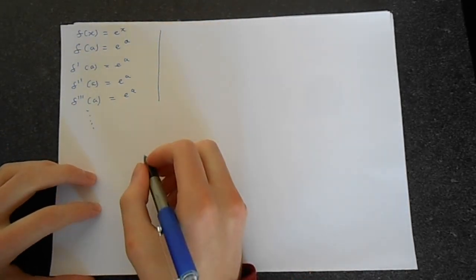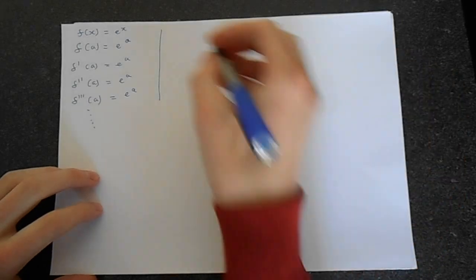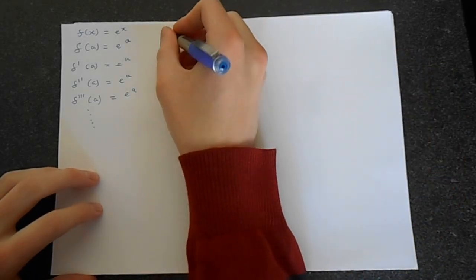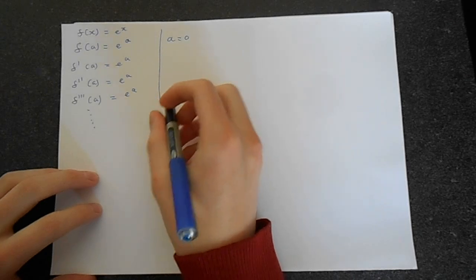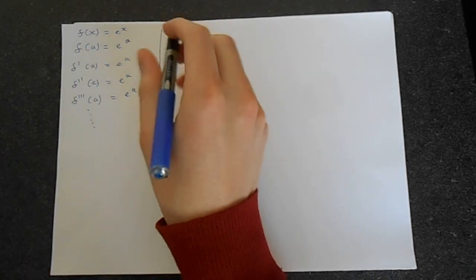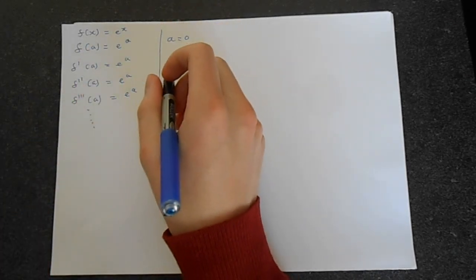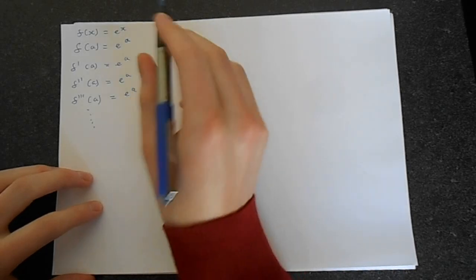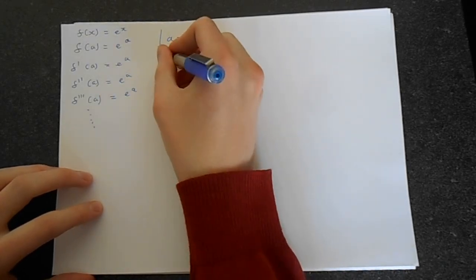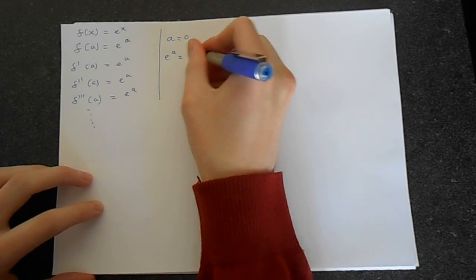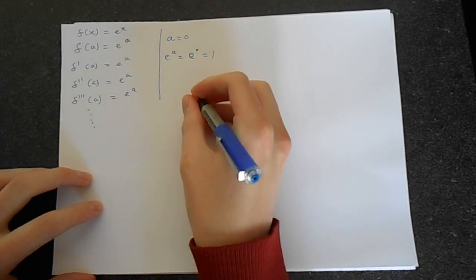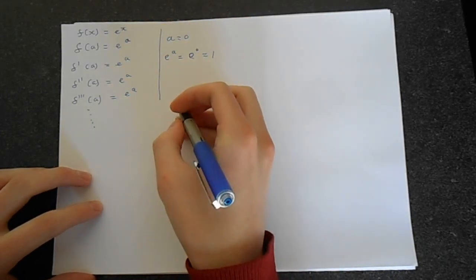Second step, now let's evaluate these. Let's choose a equals 0. This will give us the Maclaurin series. This is a special case of Taylor series. It's very useful. When a is 0, we get the Maclaurin series. And you know that we've got e of a, that's e of 0, and that is 1. So all of these are going to end up being 1.